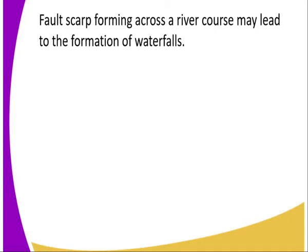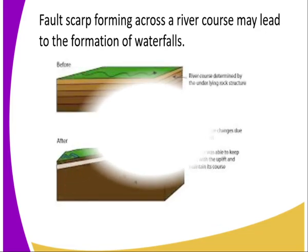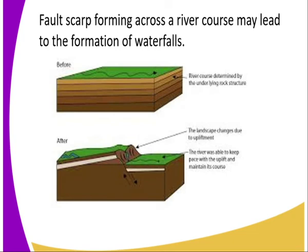Faults forming across a river may lead to the formation of waterfalls. Initially, where the river was passing through it was flat, but after faulting has taken place, the river meets the uplifted block, and a waterfall is formed. Others may be swallowed underground, as you can see from the diagram.